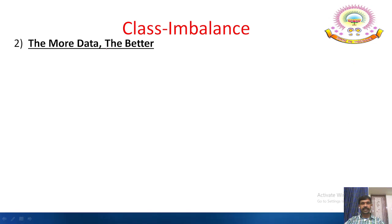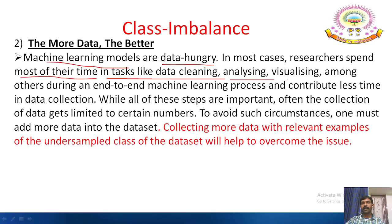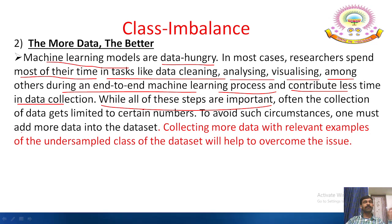The second technique is: the more data, the better. Machine learning models are data-hungry — if you provide more data, the models will provide more accurate results. Researchers often spend most of their time on data cleaning, analyzing, and visualizing, but less time on data collection. To avoid data scarcity, we must add more data into the dataset. Collecting more data with relevant examples of the under-sampled class will help overcome the issue.